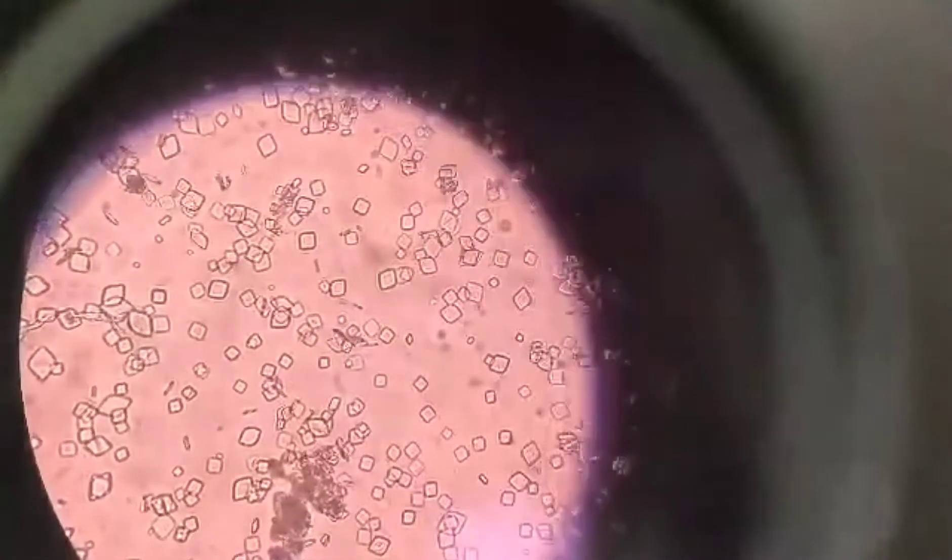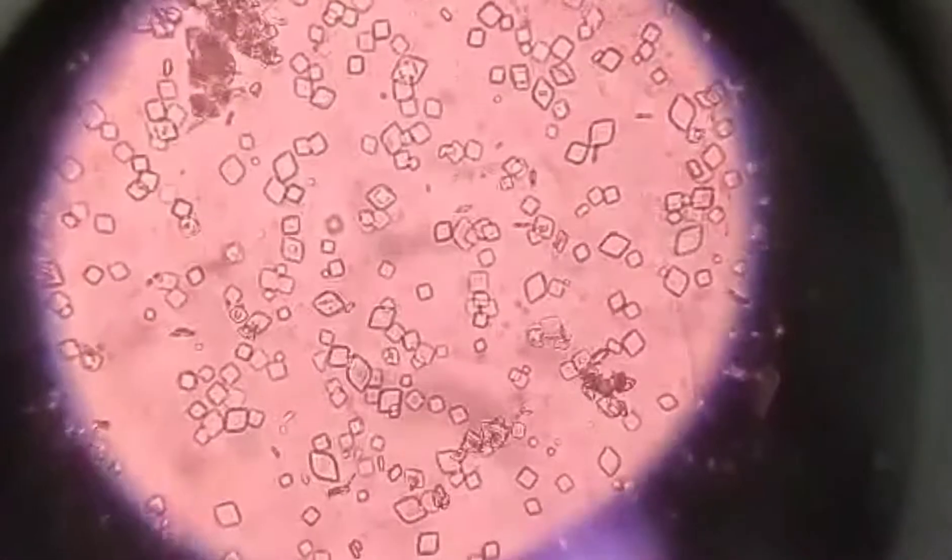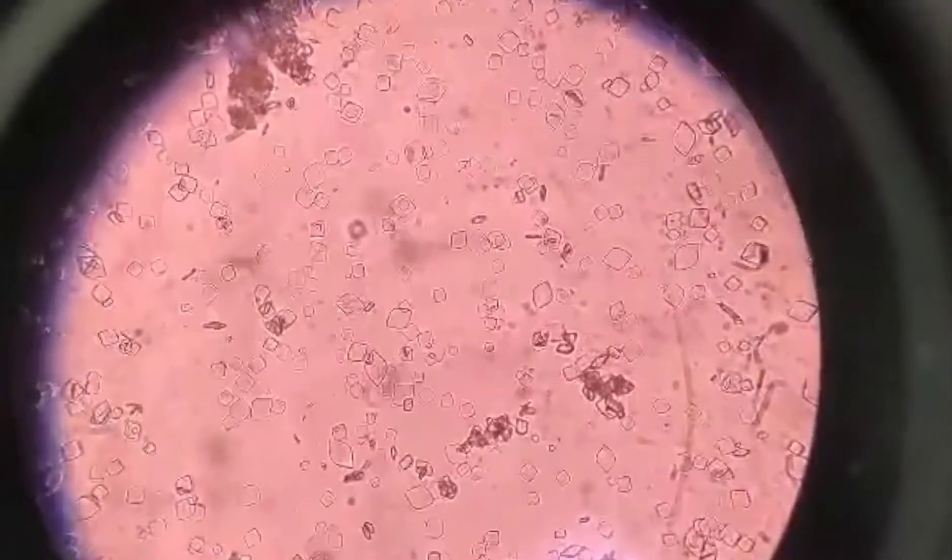Now what actually causes uric acid crystals in urine? They can also be found in the urine of healthy individuals like if you take high protein-rich diet or diet which is rich in purines, that will automatically increase your uric acid level in urine because uric acid is the end product of protein metabolism.